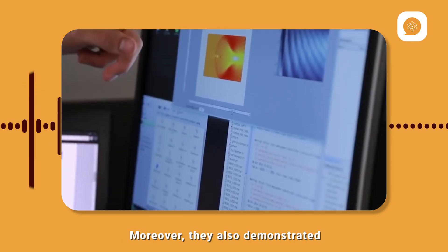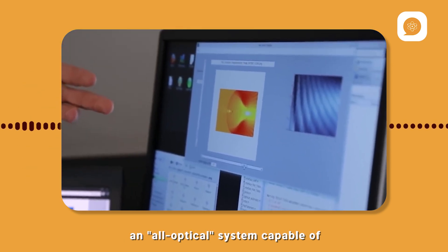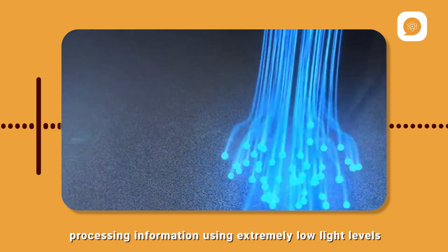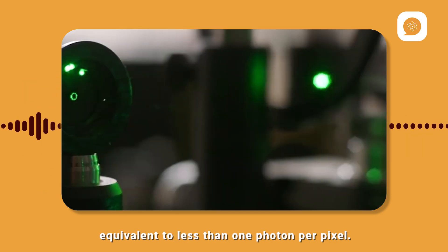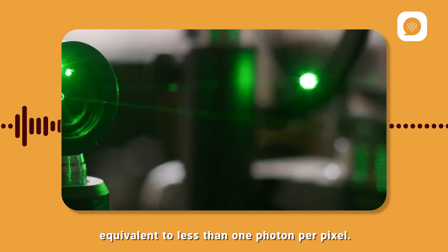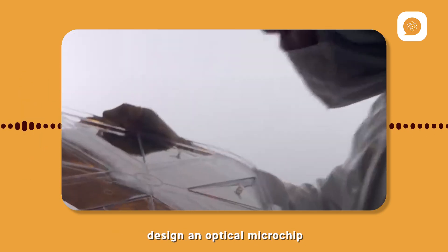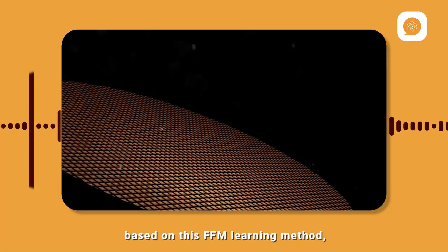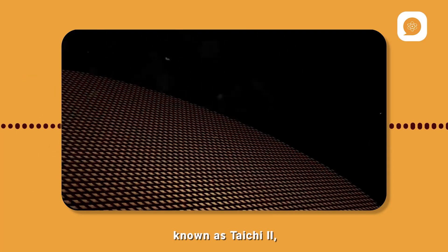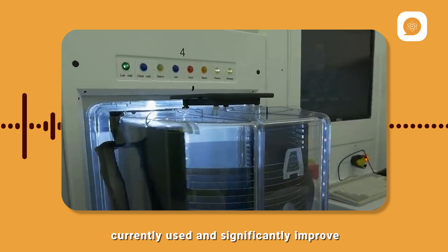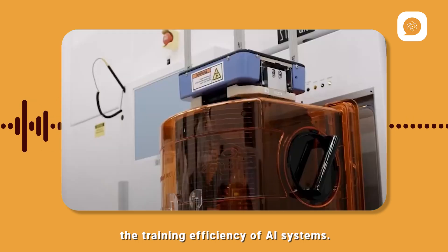Moreover, they also demonstrated an all-optical system capable of processing information using extremely low light levels, equivalent to less than one photon per pixel. And finally, the researchers were able to design an optical microchip based on this FFM learning method, known as Tai Chi 2, with the hope to replace GPU currently used and significantly improve the training efficiency of AI systems.